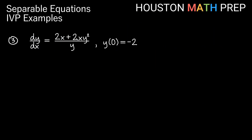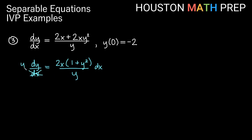Let's look at our last one: dy/dx equals 2x plus 2xy squared all over y, with condition y of 0 equals negative 2. You can see that we can factor out 2x on the right-hand side: dy/dx equals 2x times the quantity 1 plus y squared, over y. Now separating — not so bad. Multiply dx to the other side, then multiply y to the other side. The 1 plus y squared goes to the denominator. We end up with y over 1 plus y squared dy on the left, and 2x dx on the right.